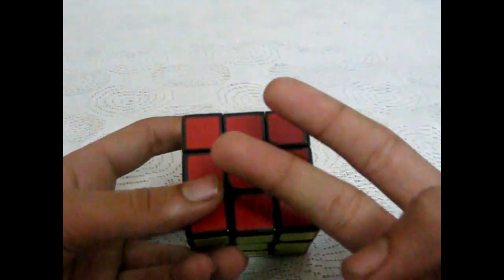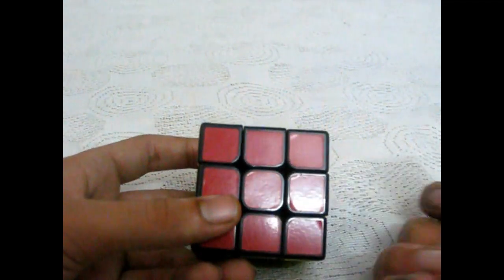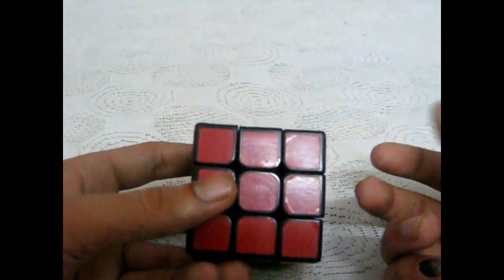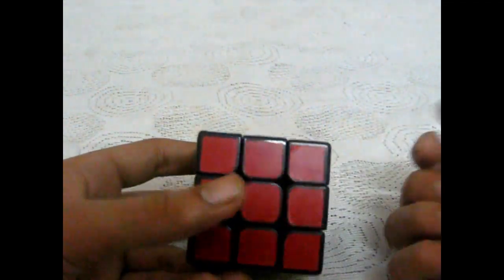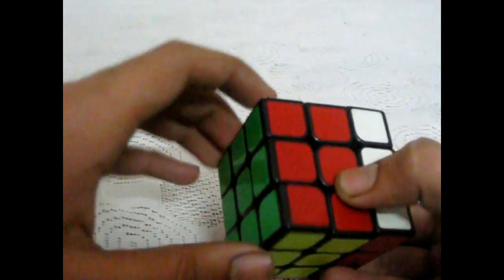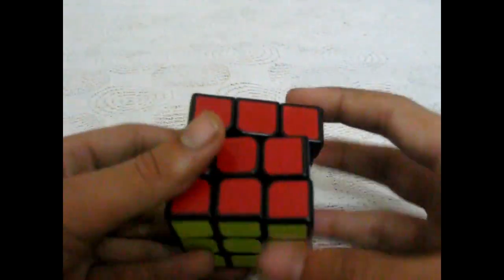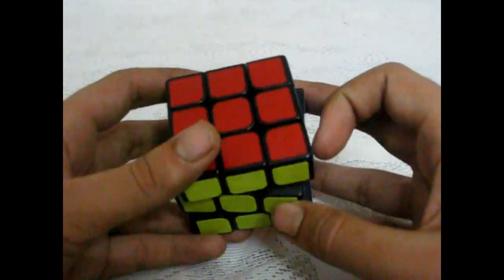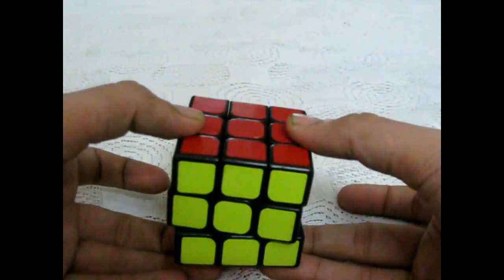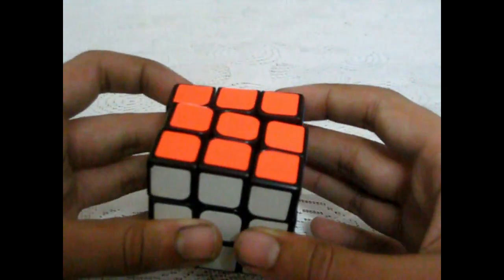The second type of movement is the prime movement or the I movement. When you have to move the layer once anticlockwise. This would be R prime, this would be L prime, U prime, F prime, this would be D prime, and now B prime.